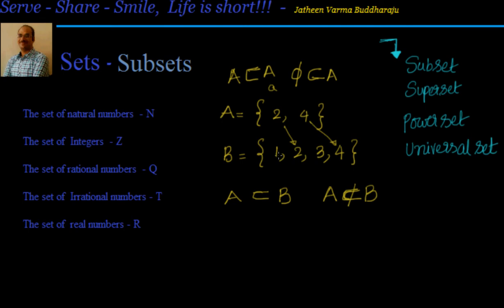Like if I have 2 comma 4 here, 2 and 4 are present in B which is having some other elements also but it has 2 and 4. So then we say that A is subset of B. Then A is called as subset and B is called as superset.